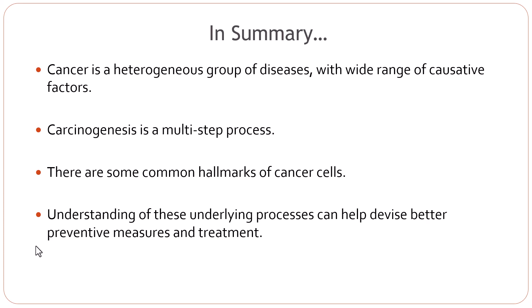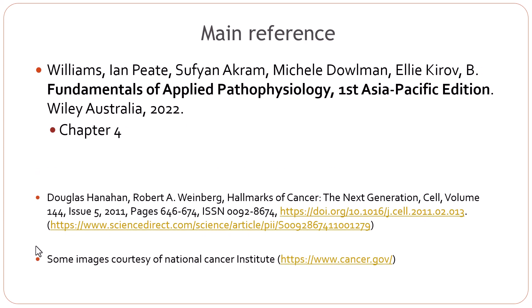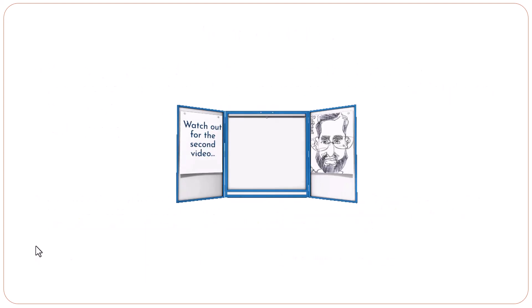In summary, cancer is a heterogeneous group of diseases with a wide range of causative factors. Carcinogenesis is a multi-step process; however, there are some common hallmarks of cancer cells. An understanding of these underlying processes can help devise better preventive measures and treatment for different types of cancers. Please consult the references to develop a deeper understanding of the topic. We will cover the clinical features, cancer staging, and treatment in the second part of the video.